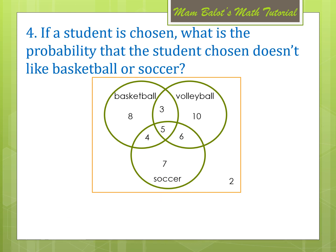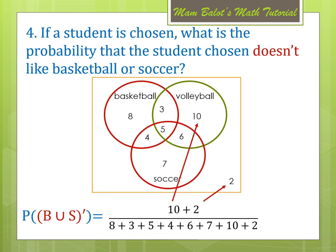Question number 4: if a student is chosen, what is the probability that the student doesn't like basketball or soccer? Since we use the word doesn't, it implies a complement. We need to find the probability of the complement of B union S — the students outside the circles of basketball and soccer, which are the students who love volleyball only and those who don't love any sports. That would be 10 plus 2, equal to 12 over 45, reduced to 4 over 15.